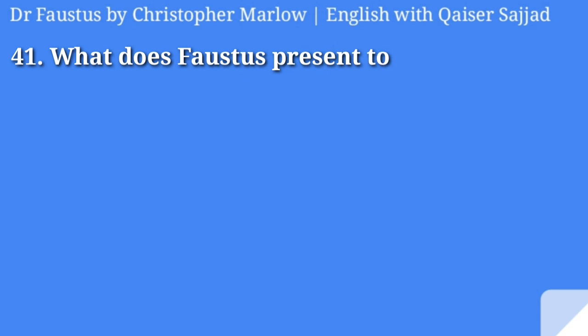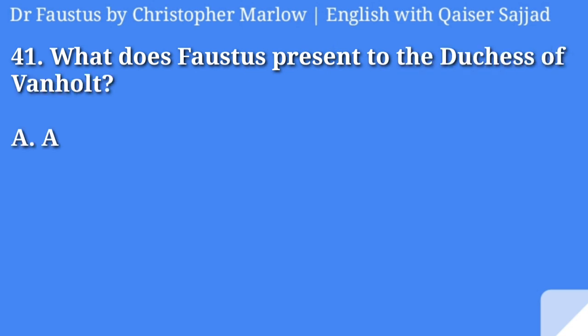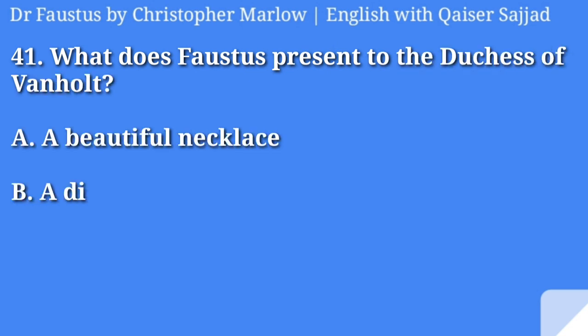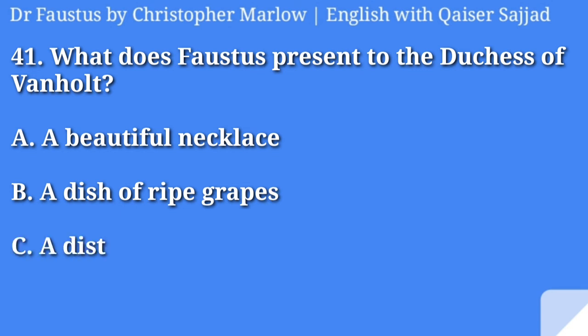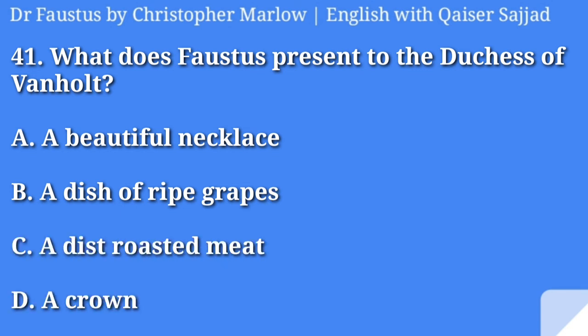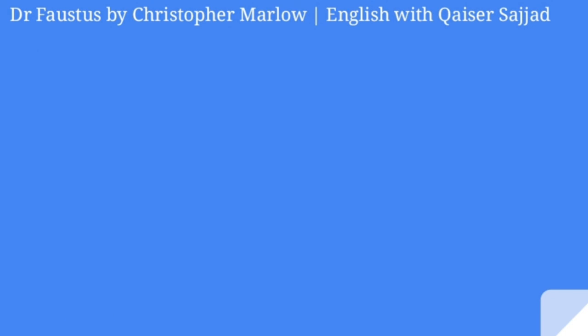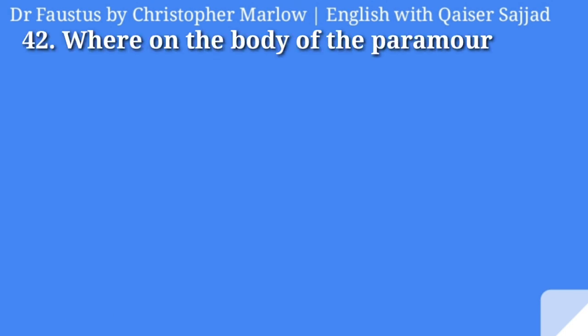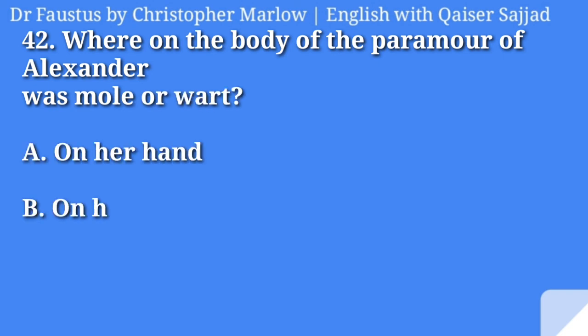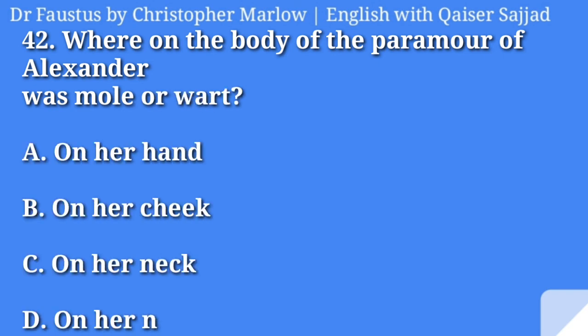What does Faustus present to the Duchess of Vanholt? A beautiful necklace, a dish of ripe grapes, a dish of roasted meat, or a crown? Answer is option B, a dish of ripe grapes. Where on the body of the paramour of Alexander was a mole? On her hand, on her cheek, on her neck, or on her nose? Answer is option C, on her neck.